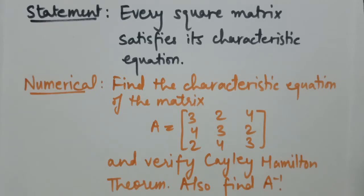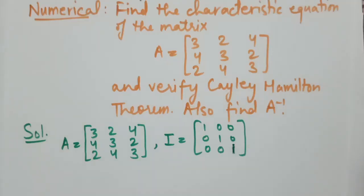The numerical we are going to solve is: find the characteristic equation of the matrix A equal to [3, 2, 4; 4, 3, 2; 2, 4, 3], verify the Cayley-Hamilton theorem, and also find A inverse.